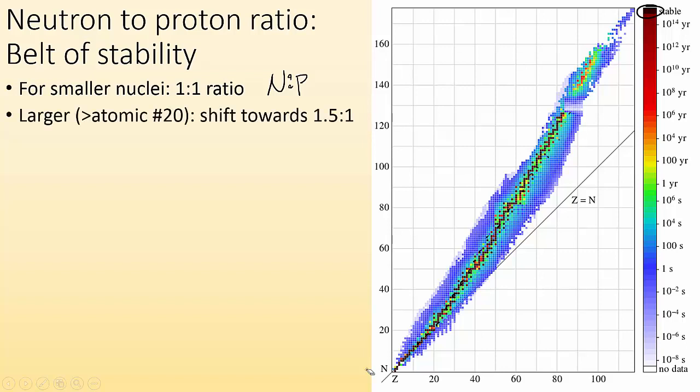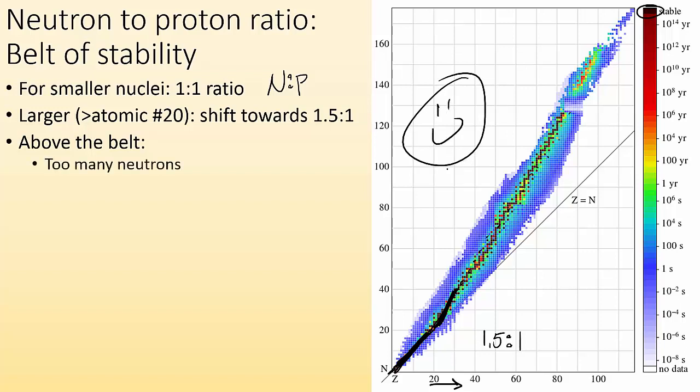The larger atomic number, things greater than atomic number 20, past this point, it shifts to a 1.5-to-1 ratio of neutrons to protons. So if you can see here, the first 20 kind of form this slope-of-1 kind of line, and then these other ones, they start to go at a different angle, a different slope, a 1.5-to-1. So if you're above the belt in this area, if you're up there, that means that you have too many neutrons.